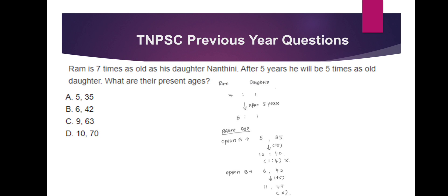ROM is 7 times as old as his daughter — the ratio is 7 to 1. After 5 years, the ratio is 5 to 1. Let's check the percentage. After 5 years, the ages become 5 to 35, then after another 5 years 10 to 45, and 4 to 1 versus 5 to 1.